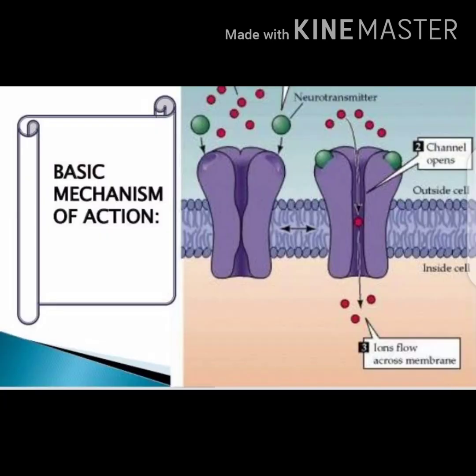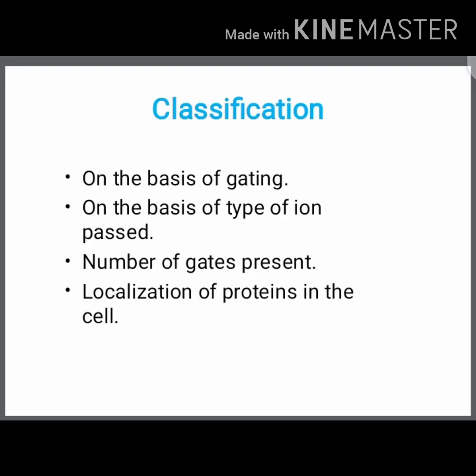Regarding the mechanism of ion channels: when impulses such as neurotransmitters or ions bind onto the receptor binding site, it opens the channel and passes the ions from the extracellular to the intracellular region. Ion channels are classified based on: gating, type of ions passed through, number of gates present, and localization of the protein on the cell.